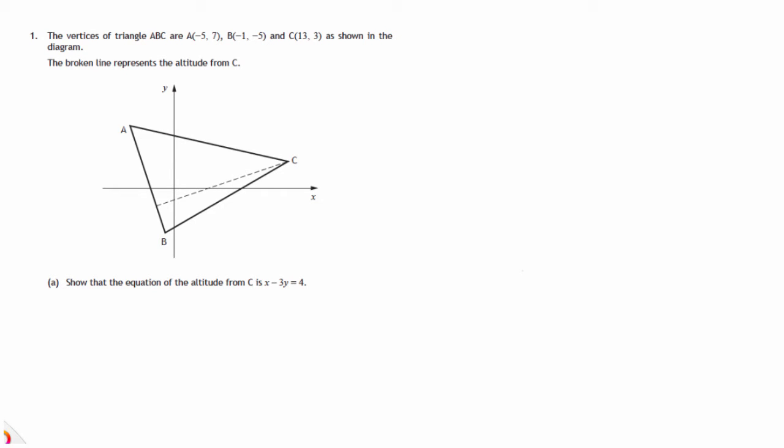This is question 1 from paper 2 of the 2015 SQA Curriculum for Excellence Higher Maths exam. We're given the coordinates of three points, vertices of a triangle ABC. We're told the broken lines represent the altitude from C.